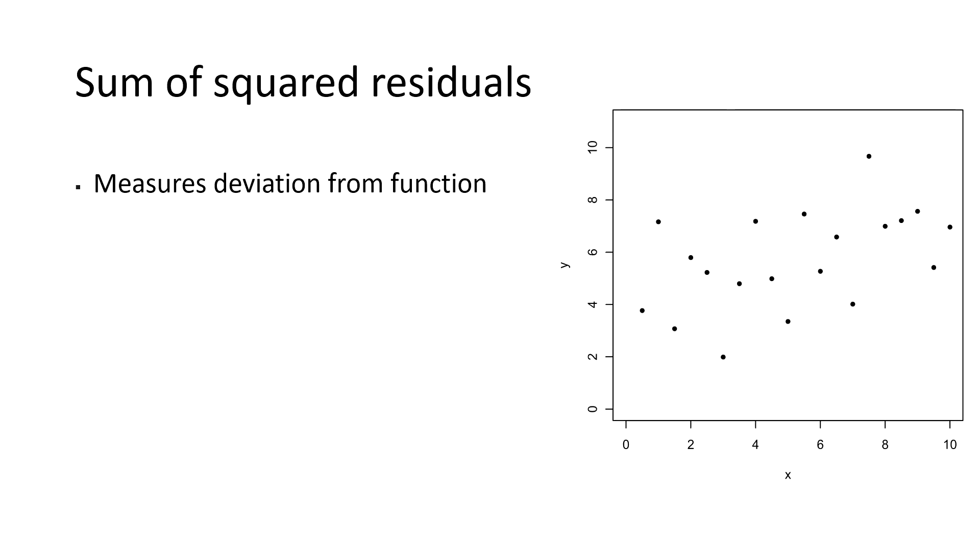Suppose we have the same dataset we already saw in the last videos. Let's now go ahead and arbitrarily choose some parameters, for example beta 0 equals 2 and beta 1 equals 0.9. These parameters define a linear function which is given by this green line. Just by looking at it we might feel that it does not provide the best fit to our data. To quantify how much the observations deviate from this linear function, we could now go ahead and calculate the sum of squared residuals.